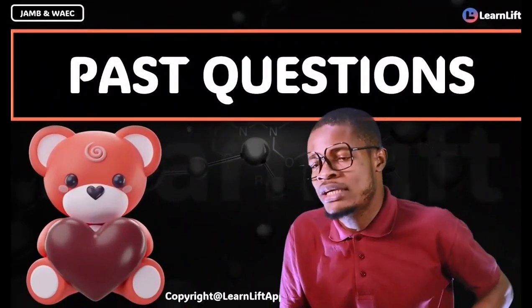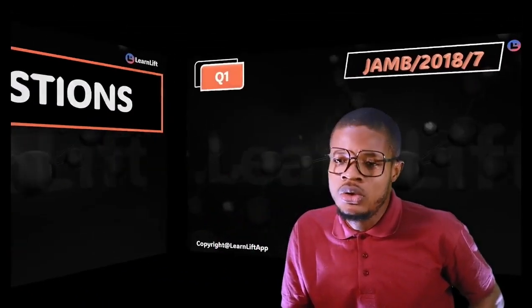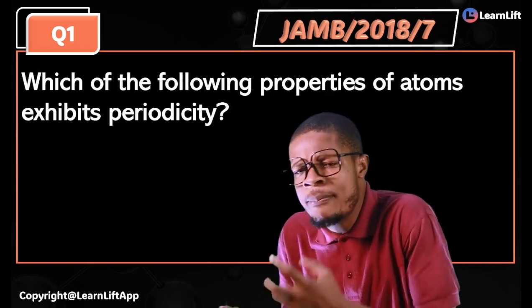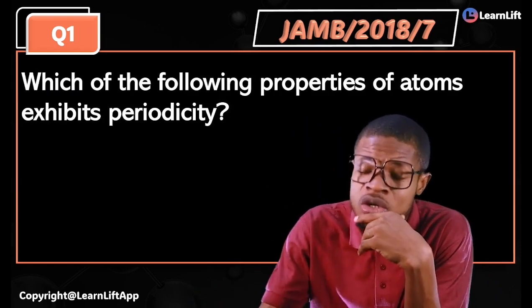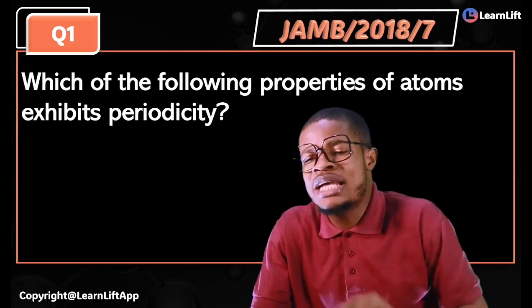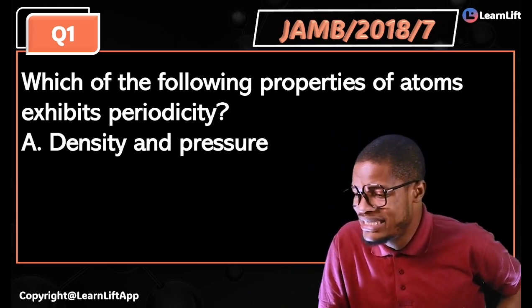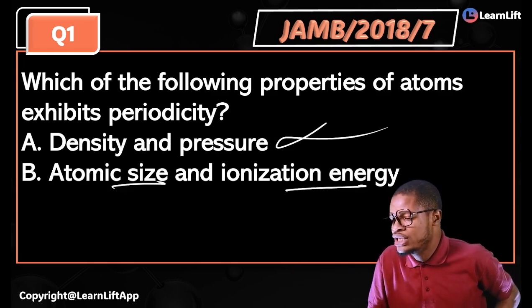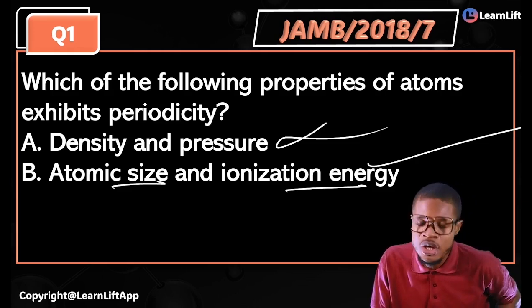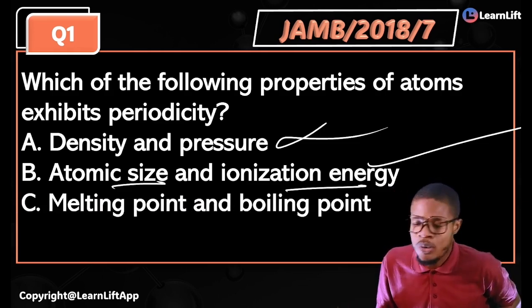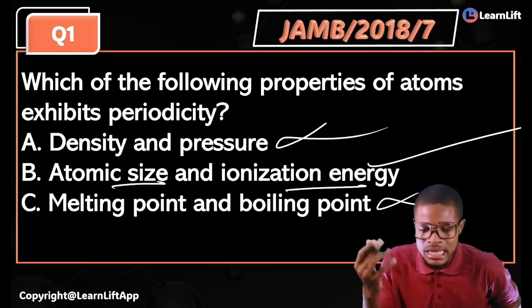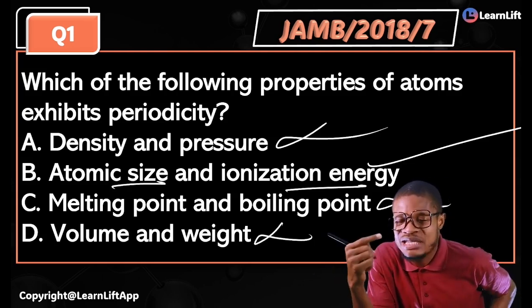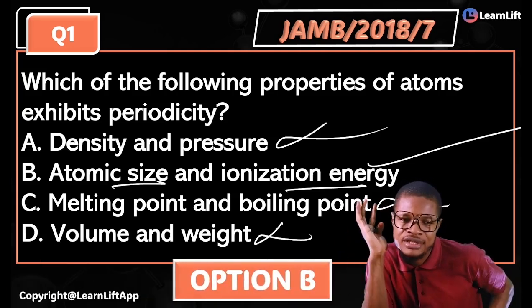Let's look at some past questions. JAM 2018 Question 7: 'Which of the following properties of an atom exhibits periodicity?' Option A: density and pressure — no, that does not exhibit periodicity. Option B: atomic size and ionization energy — correct. Option C: melting point and boiling point — not consistent enough. Option D: volume and weight — not true. The answer is Option B: atomic size and ionization energy.